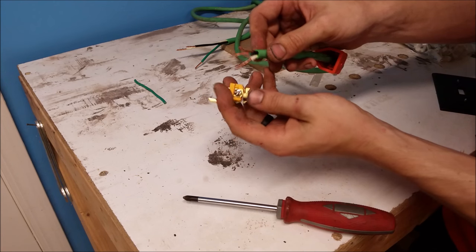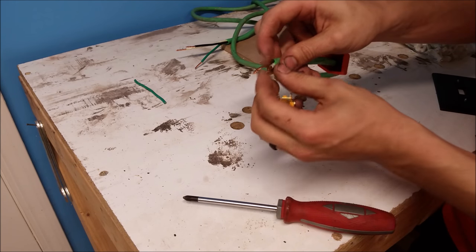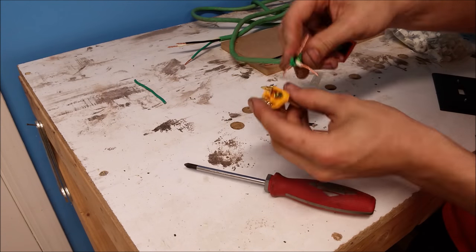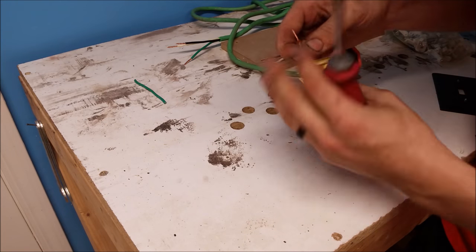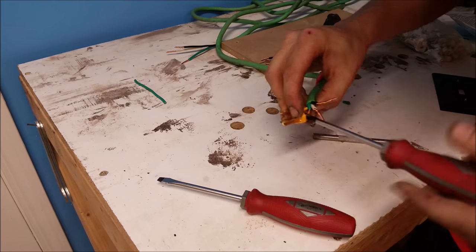So green to green, white to silver, black to brass. Just connect all those wires up and tighten the screws down. Make sure when you do this that none of your wires are contacting each other and try and keep them as short as possible so that no exposed copper can short out inside your plug.